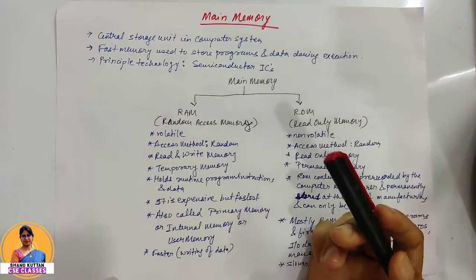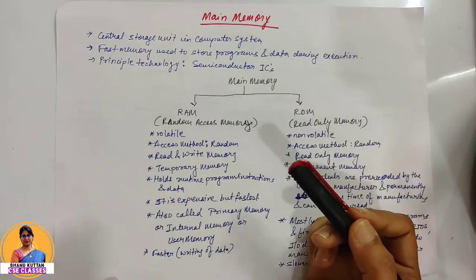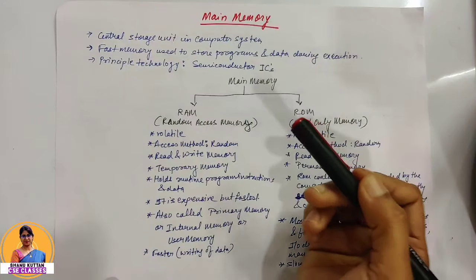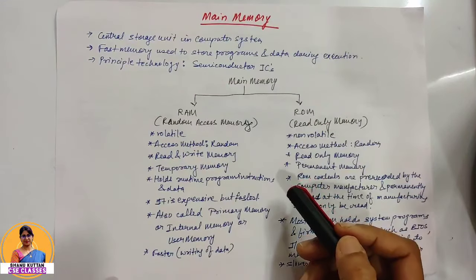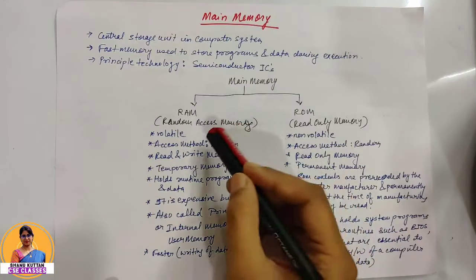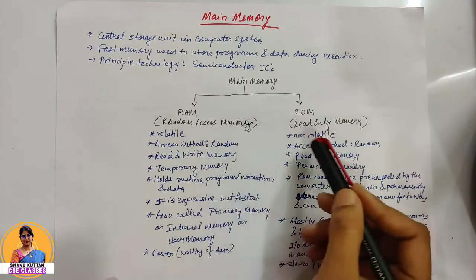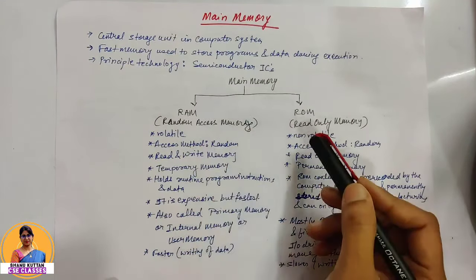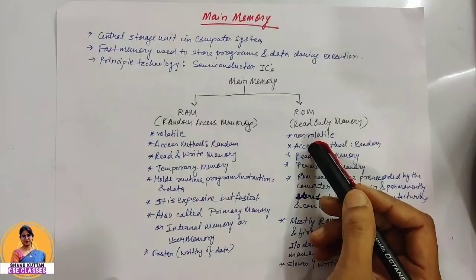Main memory is a volatile memory. If we talk about RAM — there are two types: RAM and ROM. These are two categories.